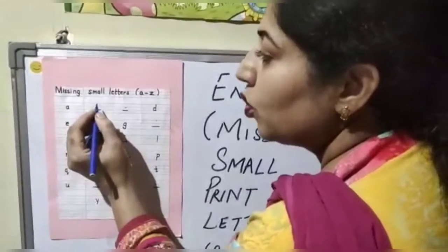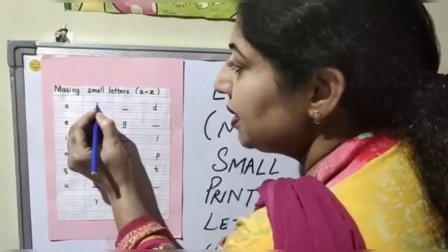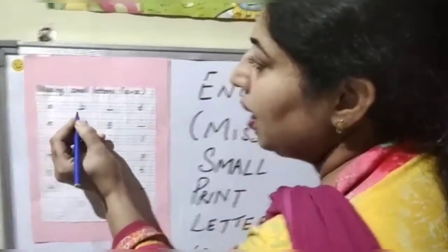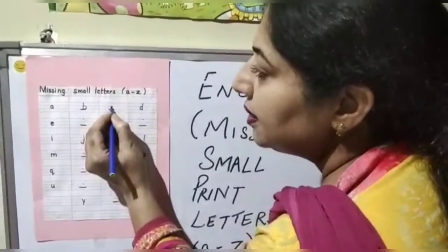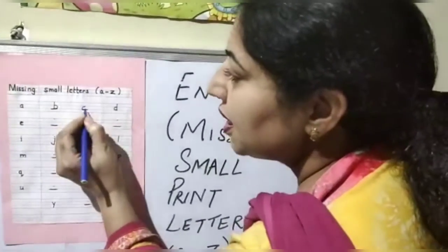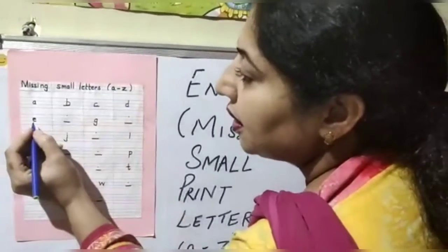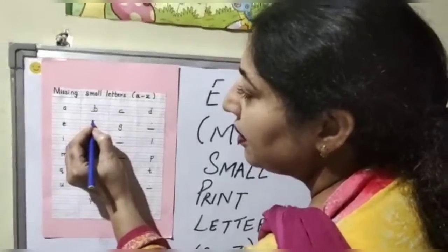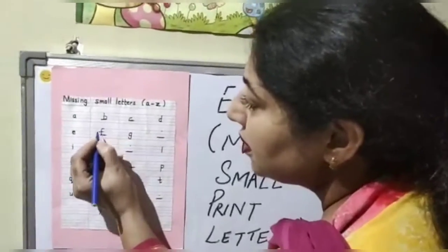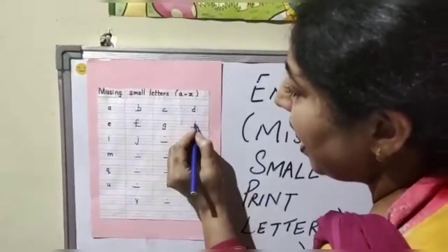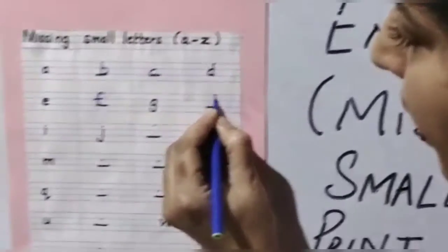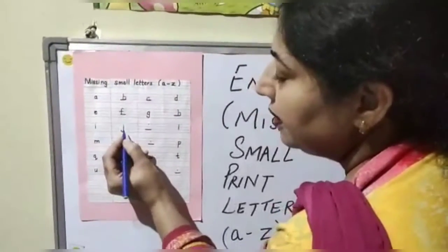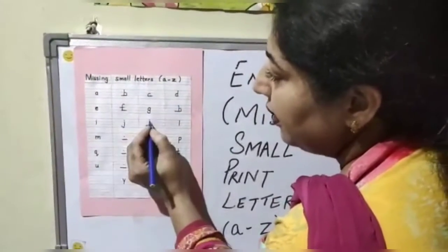A. What comes after A? B. A, B, then C, D, E. What comes after E? F, G and H. I, J, K.